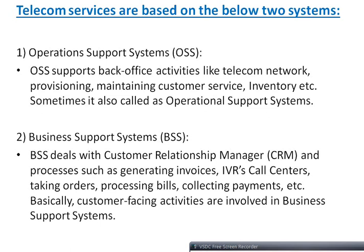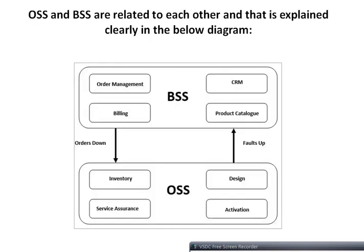Telecom services are based on two systems. First is the Operations Support System (OSS), which supports back-office activities like network provisioning, maintaining customer service, and inventory. Second is the Business Support System (BSS), which deals with customer relationship management and processes such as generating invoices, IVR, call centers, order processing, bill collection, and payment — basically all customer-facing activities.